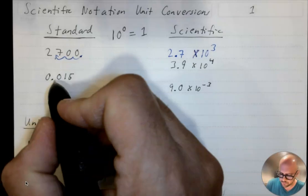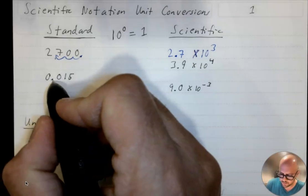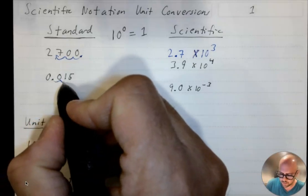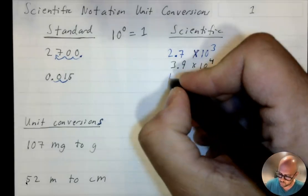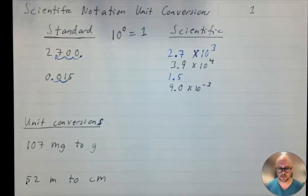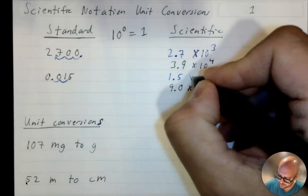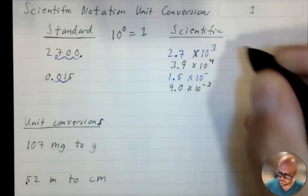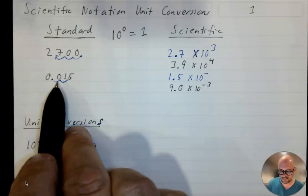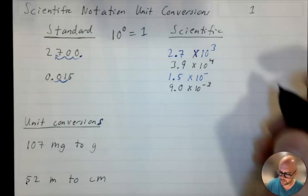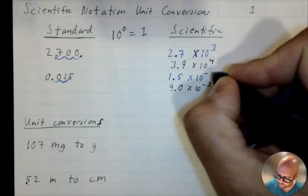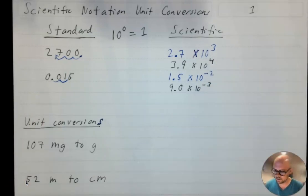I need to move the decimal place until I get a number that's between 1 and 10, and so I'm going to get the number 1.5. This is going to be times 10 to a negative number, because it is a small number. I move the decimal point 2 places, so 1.5 times 10 to the negative 2.